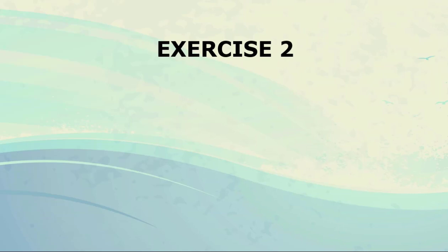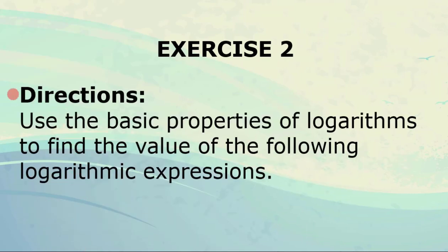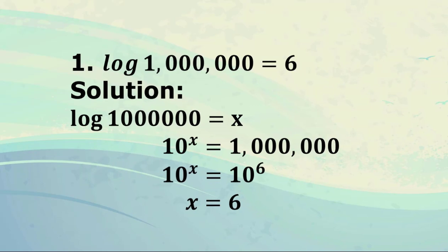Exercise number 2. Directions: use the basic properties of logarithms to find the value of the following logarithmic expressions. For number 1, log of 1,000,000 equals 6. For the solution, this is the given: log of 1,000,000. We need to know how we arrive at the answer 6. Let's express log of 1,000,000 as x. Since there is no base shown, it is understood to be base 10.